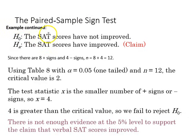So the null is that the SAT scores have not improved, and the alternative is that the scores have improved, and that's the claim. Since there are eight plus signs and four minus signs, our n is 12, and using our table we can look at the 0.05 alpha level with n equal to 12, and we get a critical value of 2.